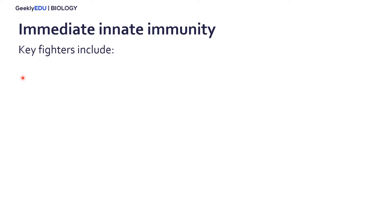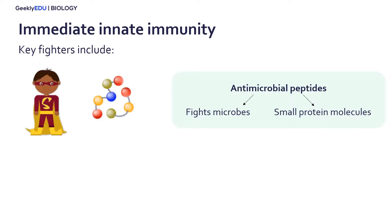Within our immediate innate immune response, we have some key fighters or molecules that fight off pathogens. The first of which are called antimicrobial peptides. Antimicrobial just means to fight microbes, and peptides are very small protein molecules. Proteins are made up of amino acids, and here this figure is showing a few peptide molecules — the different colored balls are amino acids, which are strung together to create short peptide molecules.